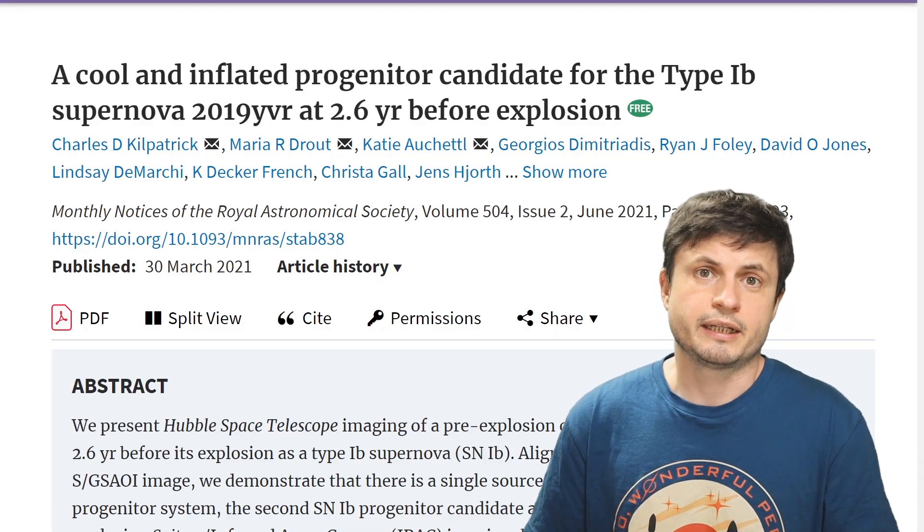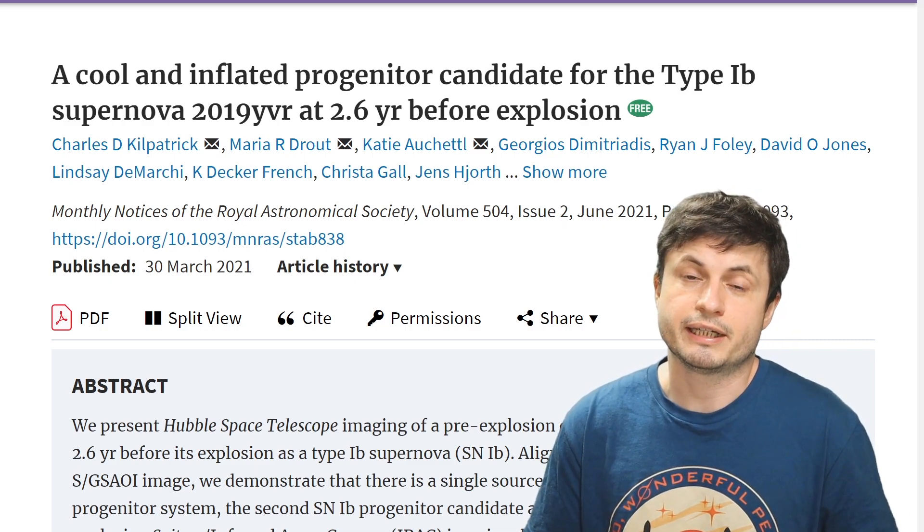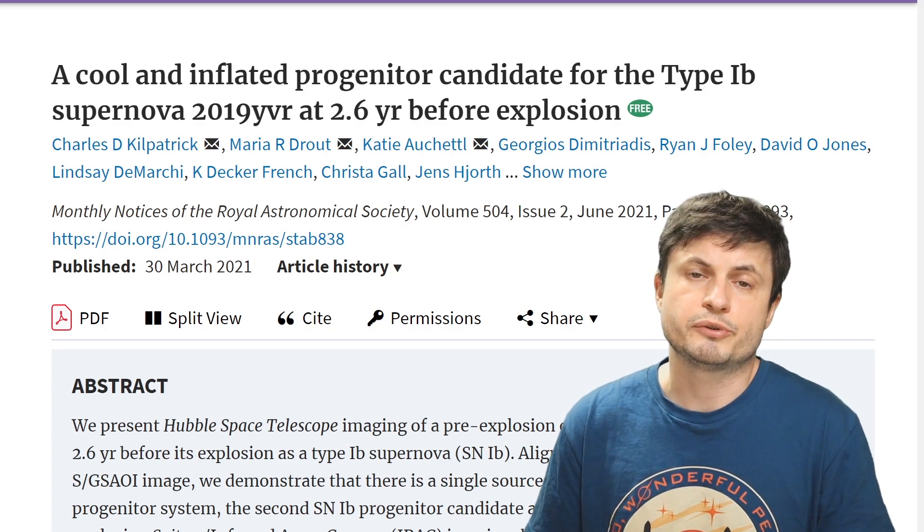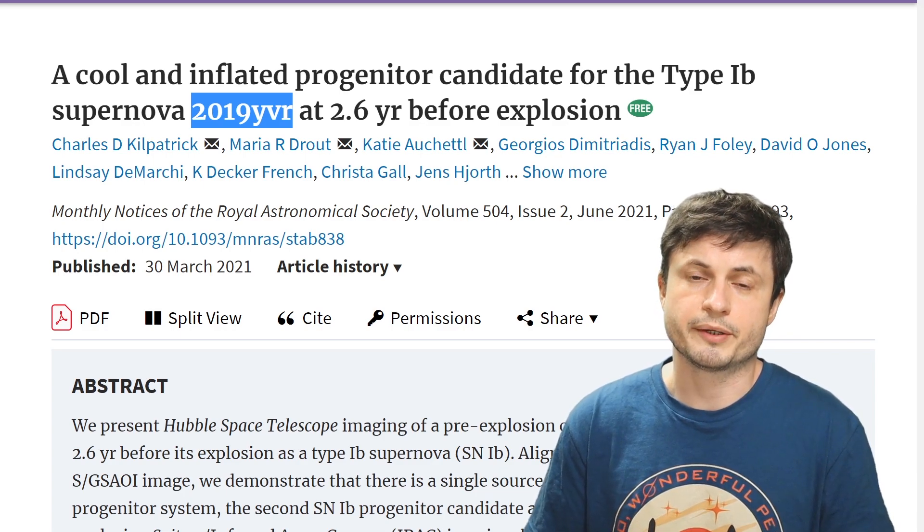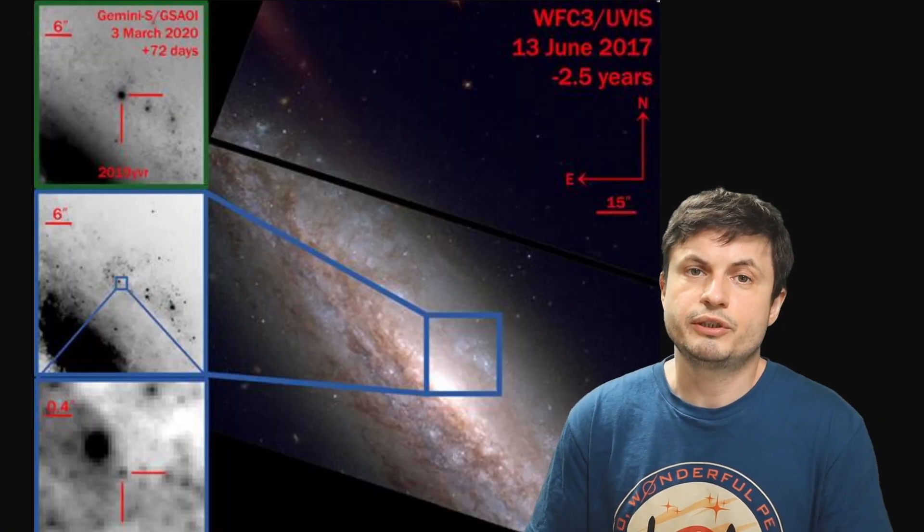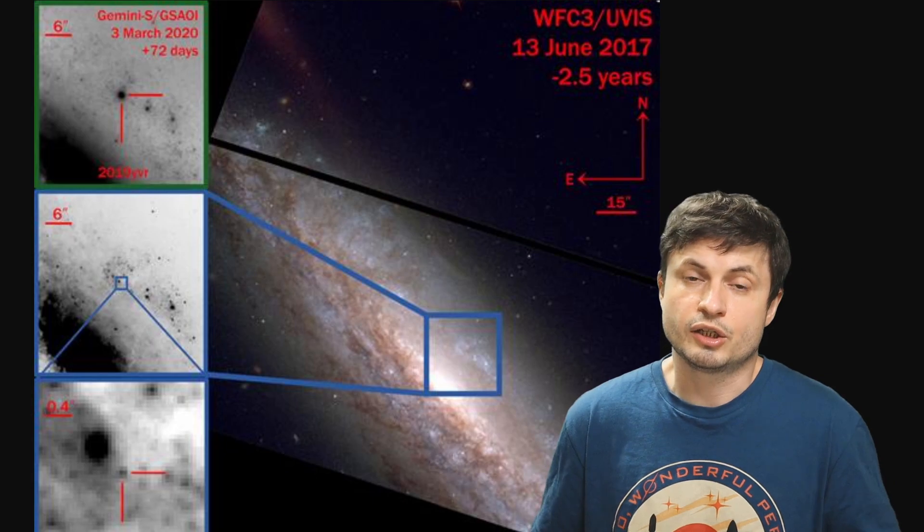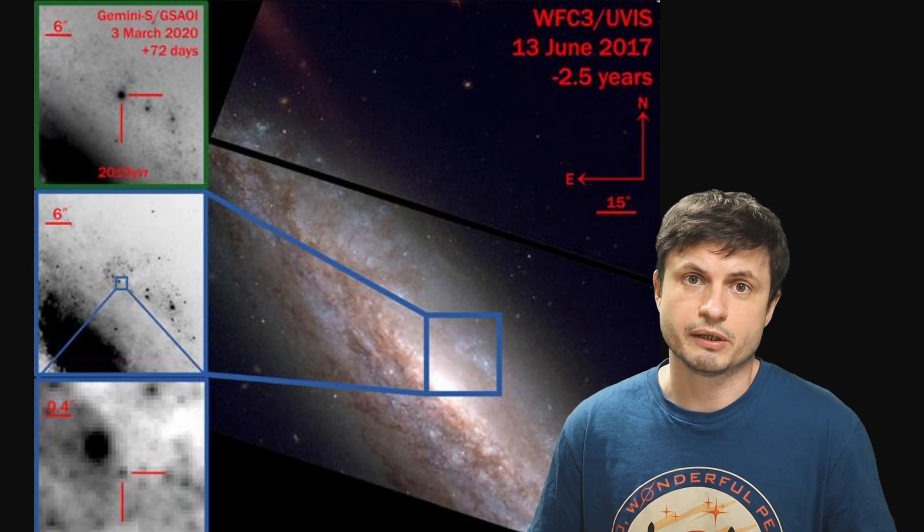And so very interestingly the team behind this paper right here that you see was able to quite recently identify a star that created a pretty famous supernova approximately two years ago, a supernova known as 2019 YVR. And by using some of the images from the Hubble telescope, and by looking at the galaxy where this happened, known as NGC 4666, approximately 46 million light years away from us, they were definitively able to identify what seems to have been the progenitor star of the supernova, the star that's now missing obviously, which only suggests that this was indeed the star that exploded.